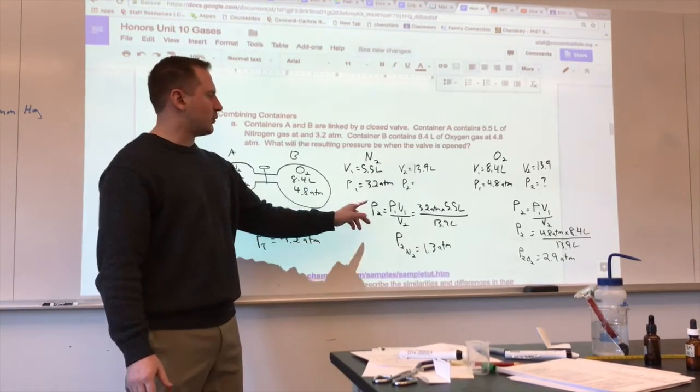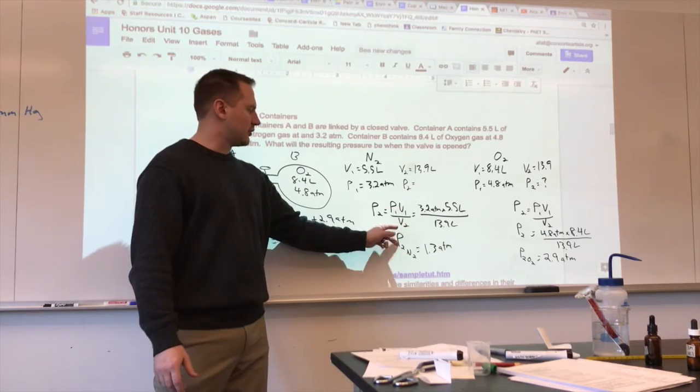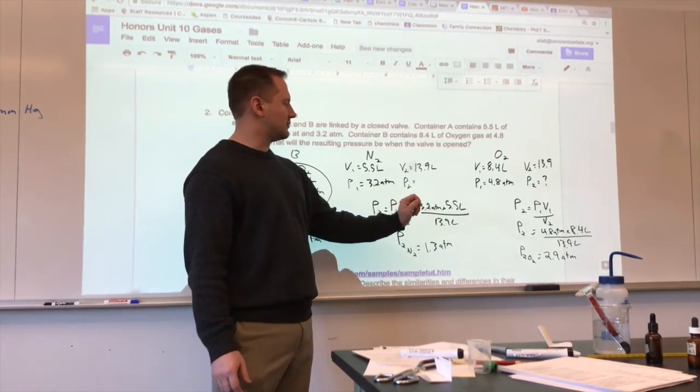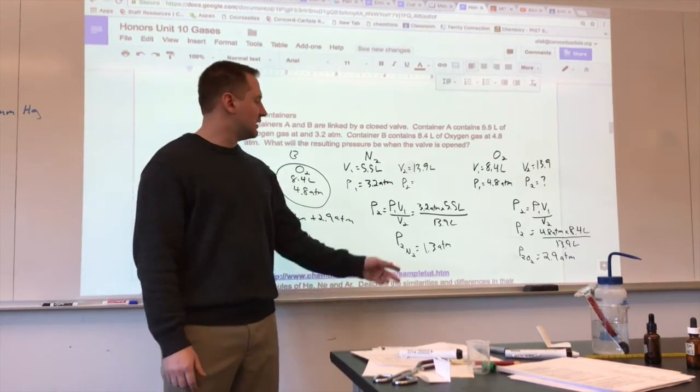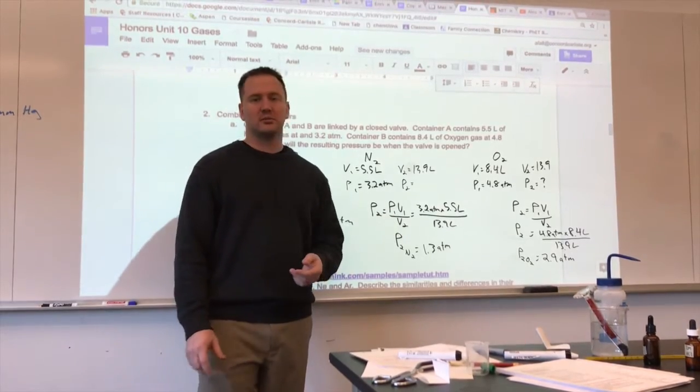For the nitrogen, we rearrange Boyle's Law to be P2, or the final pressure, is equal to P1 V1 over V2. Then we plug in those values. You have an initial pressure of 3.2 atmospheres, initial volume of 5.5 liters, divided by the final volume over which it's allowed to move, which is 13.9 liters.